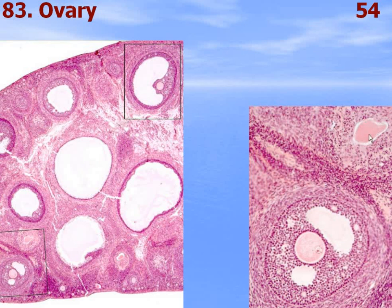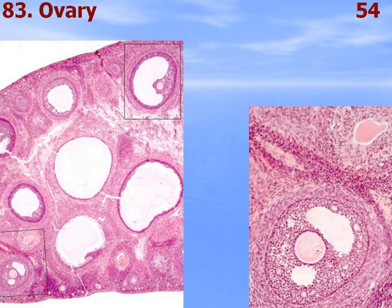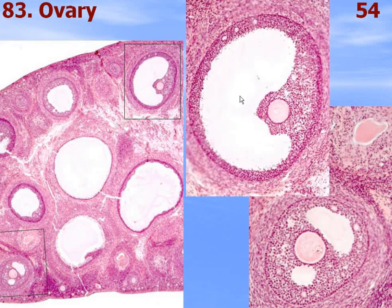This is an atretic follicle with a folded zona pellucida of a dead oocyte, and around it the remnants of follicular cells and thecal cells. Corpus albicans is dense irregular connective tissue that forms on the place of a corpus luteum which died by apoptosis. Tertiary follicle.